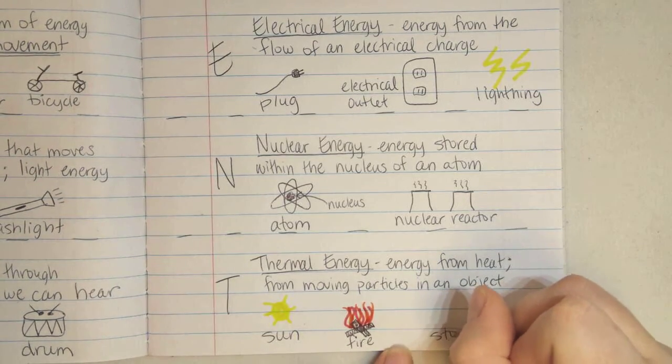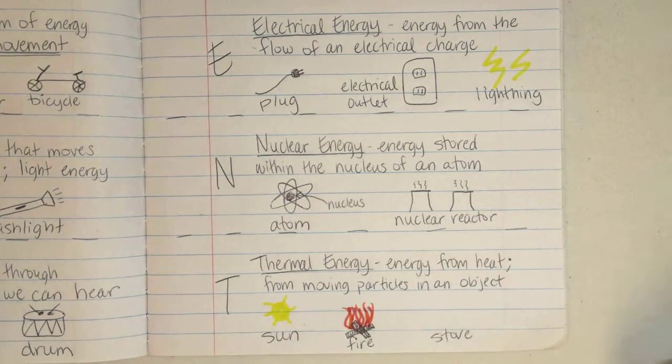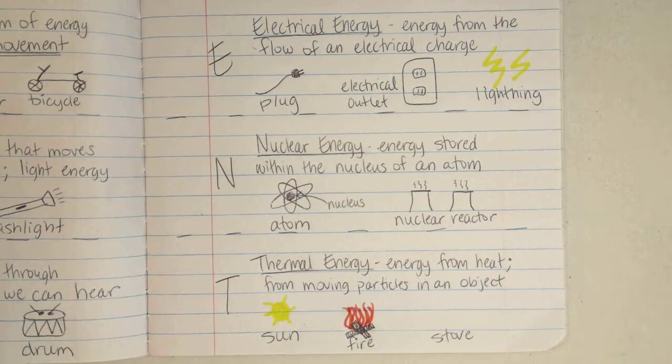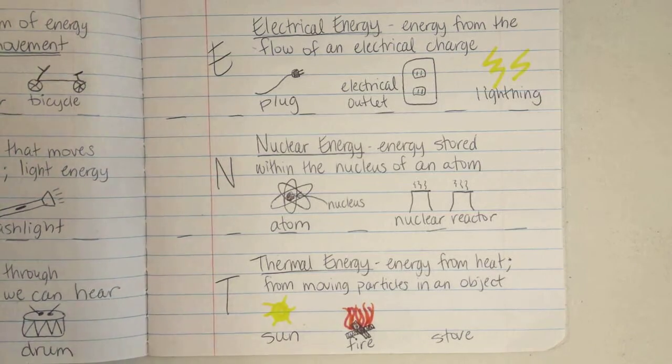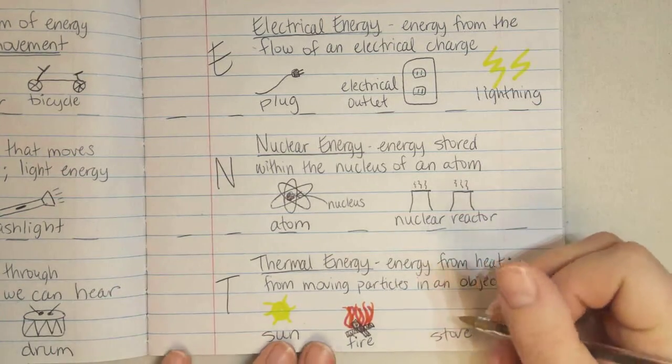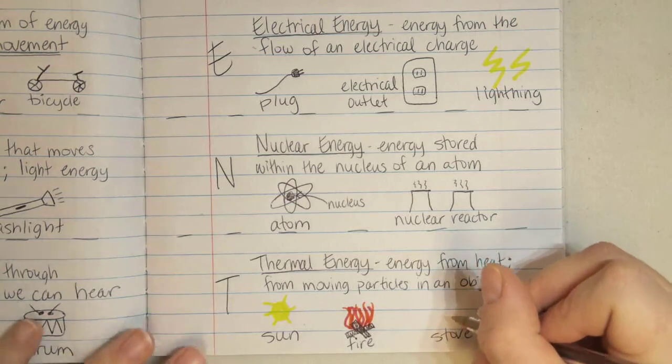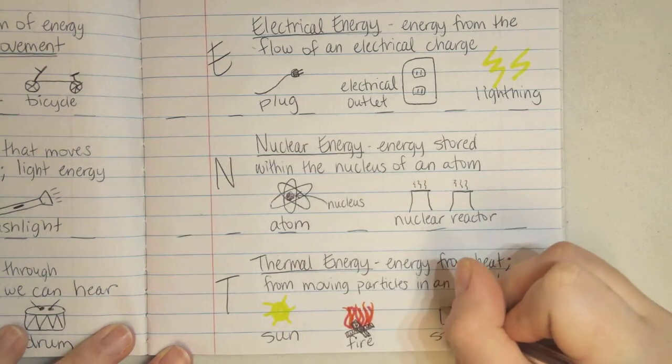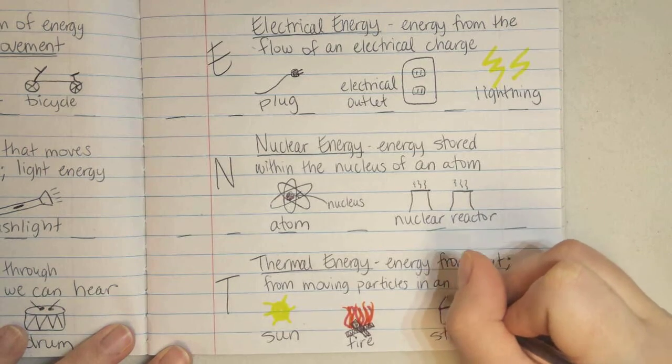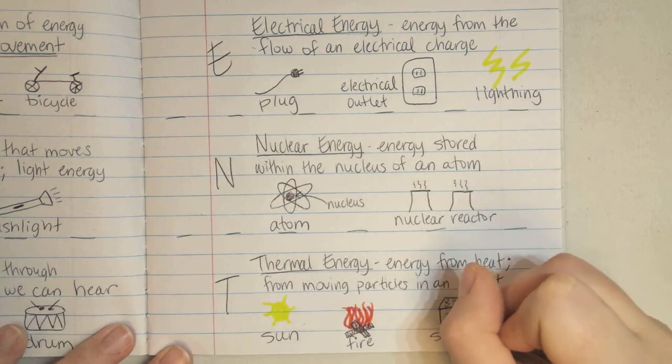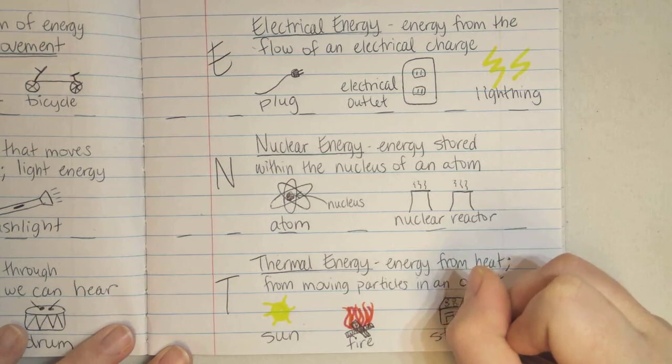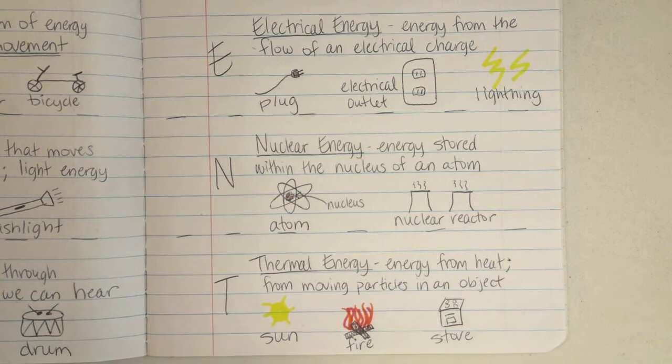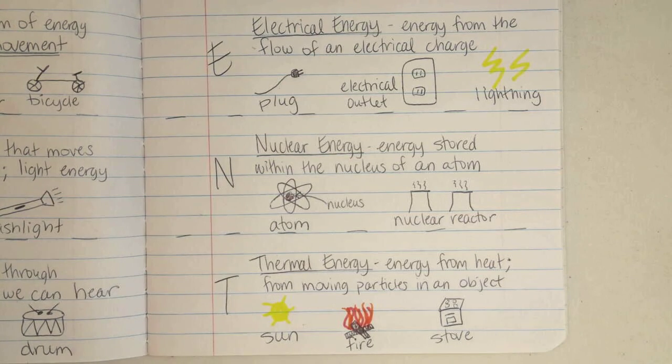And thermal energy, often used for cooking, oh, let me label this one as fire, just in case you didn't tell. The last one, thermal energy used in cooking, we can use a stove. So if we have our stove, this might be hard to draw. I'm not sure why I picked this as an example. So, the top part, we have our four burners, and then we have our oven part down here. So, a stove is our last example of thermal energy.